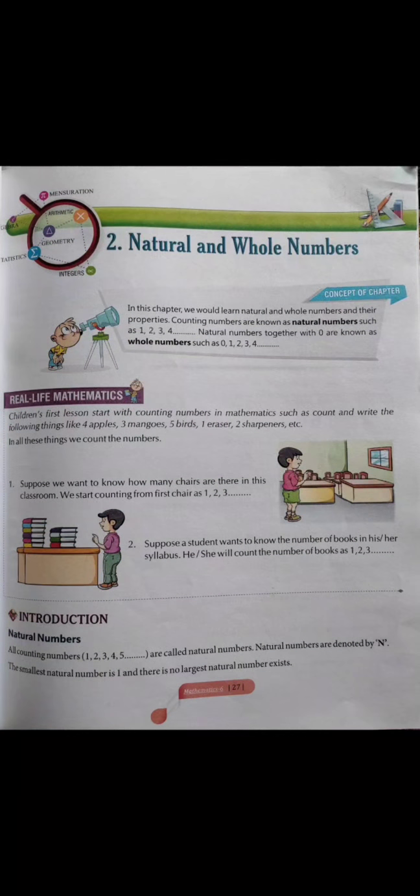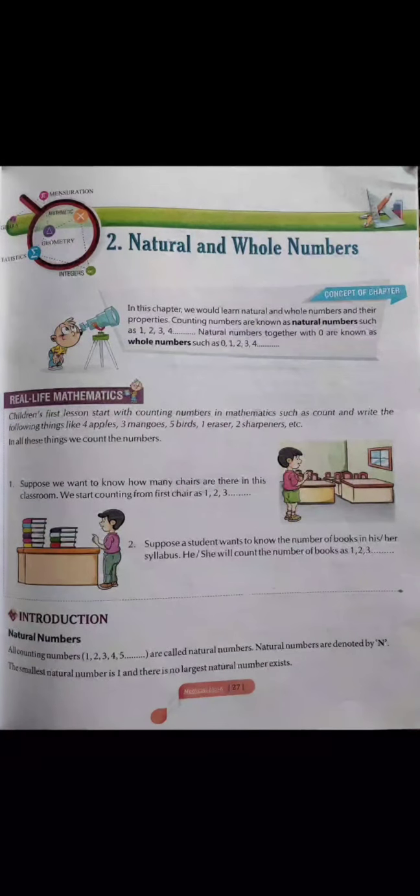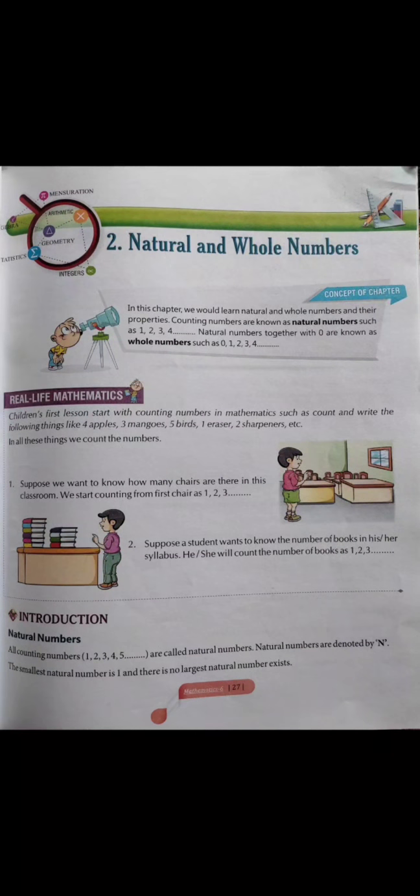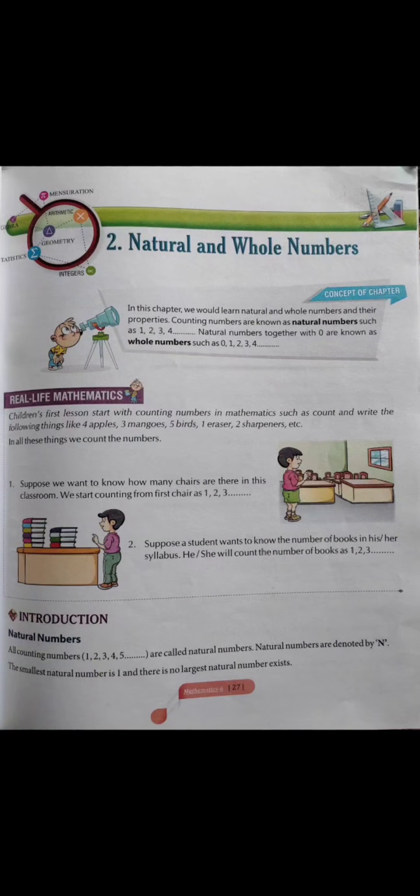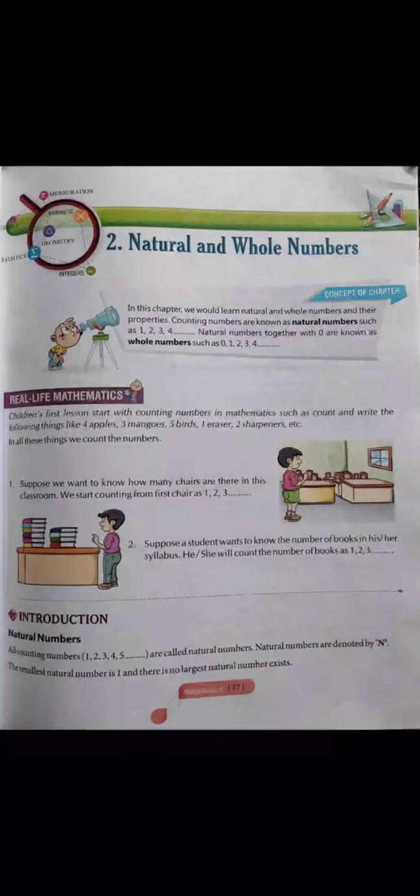Ab hum baat karte hain whole numbers ki. Whole numbers hote hain natural numbers together with zero. So whole numbers are all natural numbers plus zero — meaning whole numbers start from 0: 0, 1, 2, 3, 4, up to infinity.